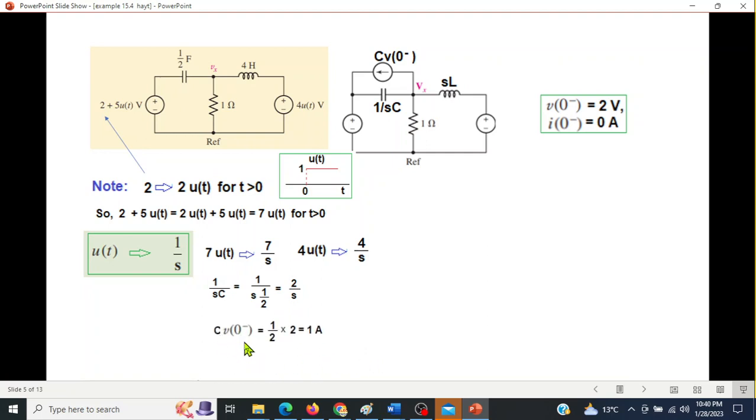Cv0, c is half, v0 is 2, so cv0 is 1. If we put values in s-domain: 1, 7 by s, 4 by s, capacitor 2 by s, inductor 4s.